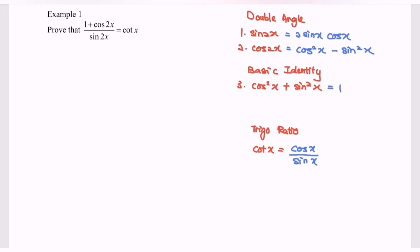For this question I'm going to start with the left-hand side where we have 1 plus cos 2x over sin 2x.